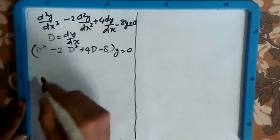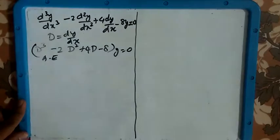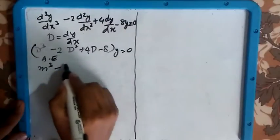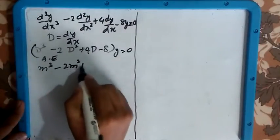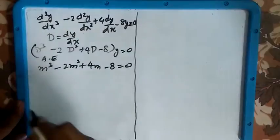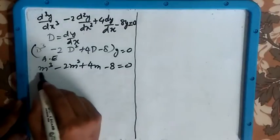Now you can convert this into auxiliary equation which is nothing but converting D into m. So m³ - 2m² + 4m - 8 = 0. In this case you can see we have the cubic equation.